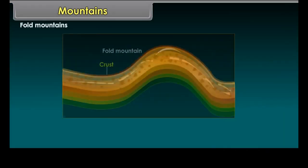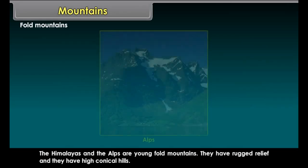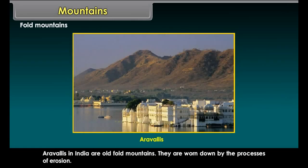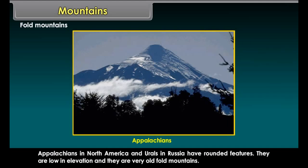Fold Mountains are mountains formed because of the folding process of the strata. The Himalayas and the Alps are young fold mountains. They have rugged relief and high conical hills. Aravallis in India are old fold mountains, worn down by the processes of erosion. Appalachians in North America and Urals in Russia have rounded features; they are low in elevation and are very old fold mountains.